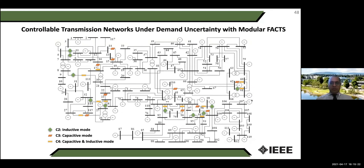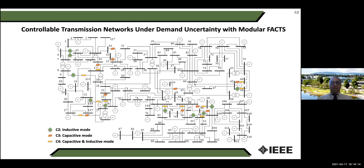Another optimization application involves FACTS devices in the system. These can change line characteristics — for example, the X value of a line. Increasing X reduces flow on that line and pushes it to parallel paths; reducing X increases flow on the line and absorbs flows from other lines. This helps manage congestion in the transmission network, avoiding installation of new transmission lines and utilizing existing assets more efficiently.